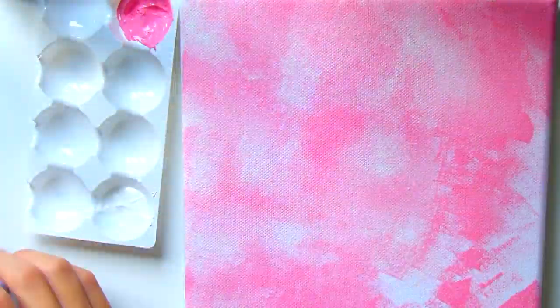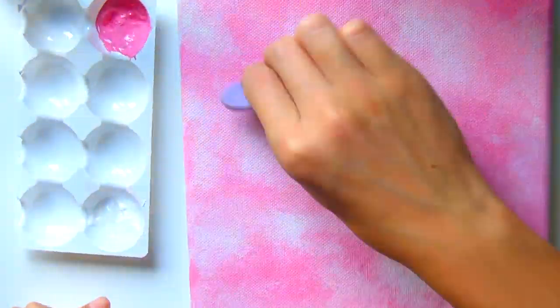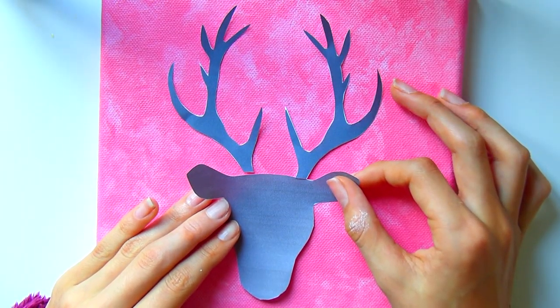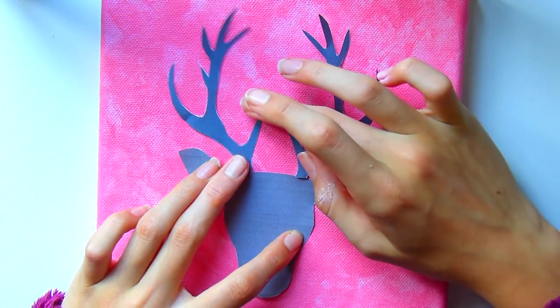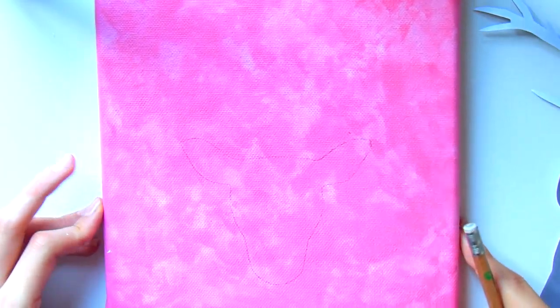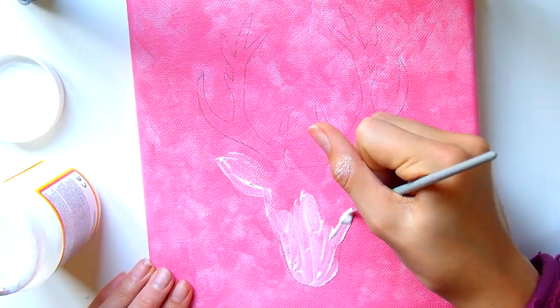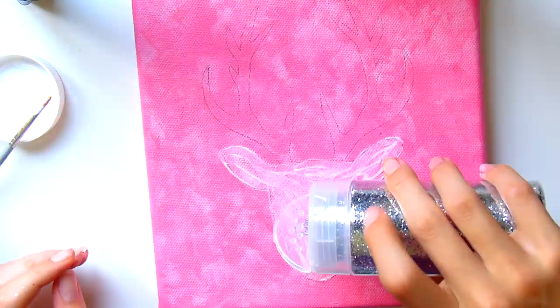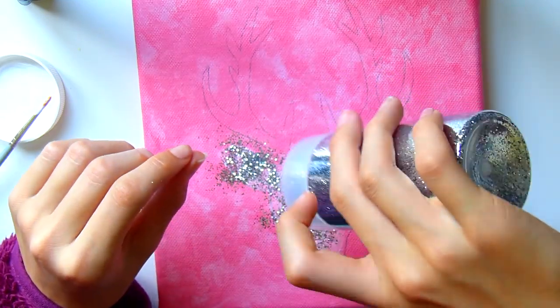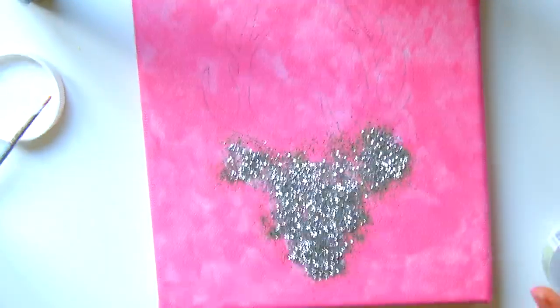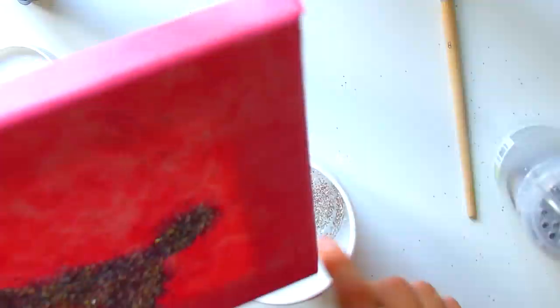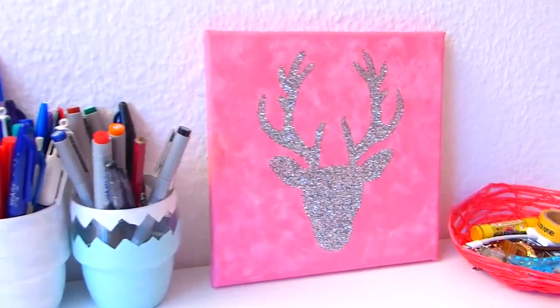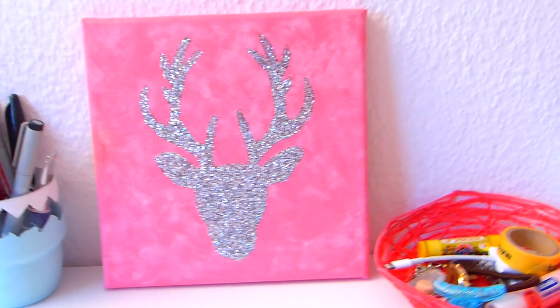Vous n'êtes pas obligé de faire des petits points comme moi. Vous pouvez faire des lignes ou n'importe quelle forme, tant que ça vous plaît. Ensuite je suis venue imprimer un patron tête de cerf sur internet et je vais le reporter sur ma toile. Puis je vais remplir l'intérieur avec de la colle liquide transparente, de la Mod Podge, puis saupoudrer le tout de paillettes argentées. On fait ça pour tout le cerf, on étale bien, on enlève l'excédent et on n'oublie pas de vernir une fois sec pour éviter d'avoir des paillettes partout.